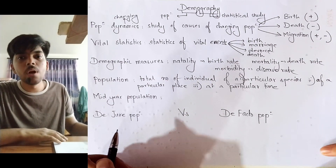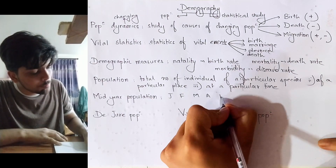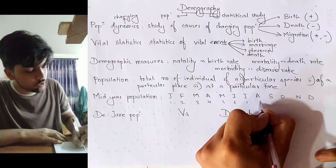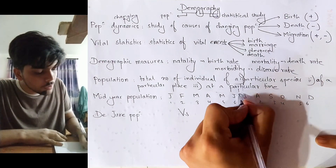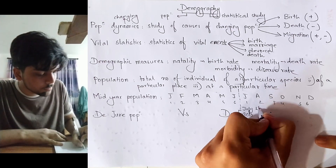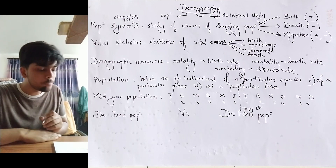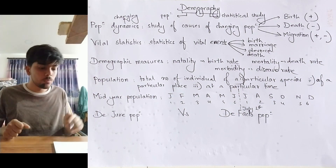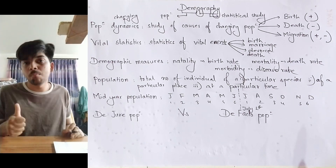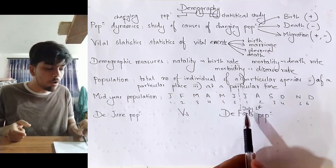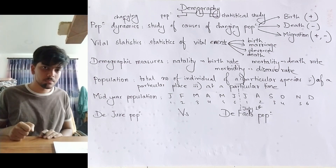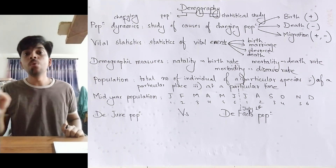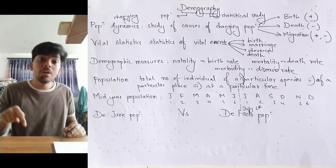Mid-year population. A year contains 12 months, and at the middle of the year there is July 1st. During July 1st, the number of people living at a particular place gives the mid-year population of that place. For example, in Kathmandu during July 1st of 2023 AD, the number of people living would give the mid-year population of Kathmandu during 2023 AD.